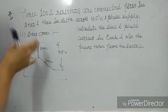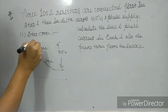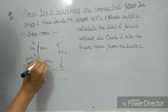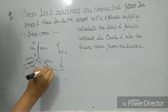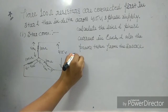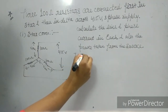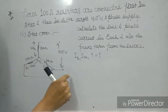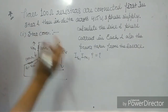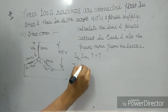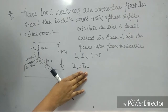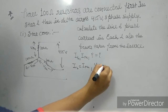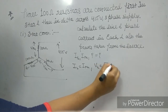This is phase, phase, phase — means each has a phase voltage VPH. This is your phase voltage. Now, we need to find line current IL, phase current IPH, and power. In star connection, IL equals IPH and VL equals root 3 times VPH.